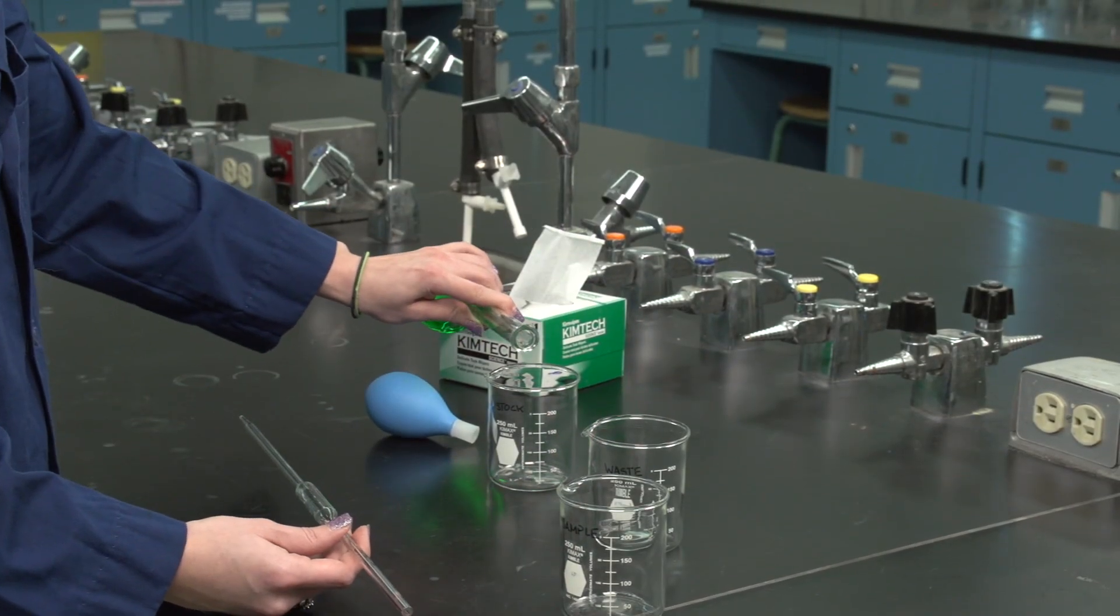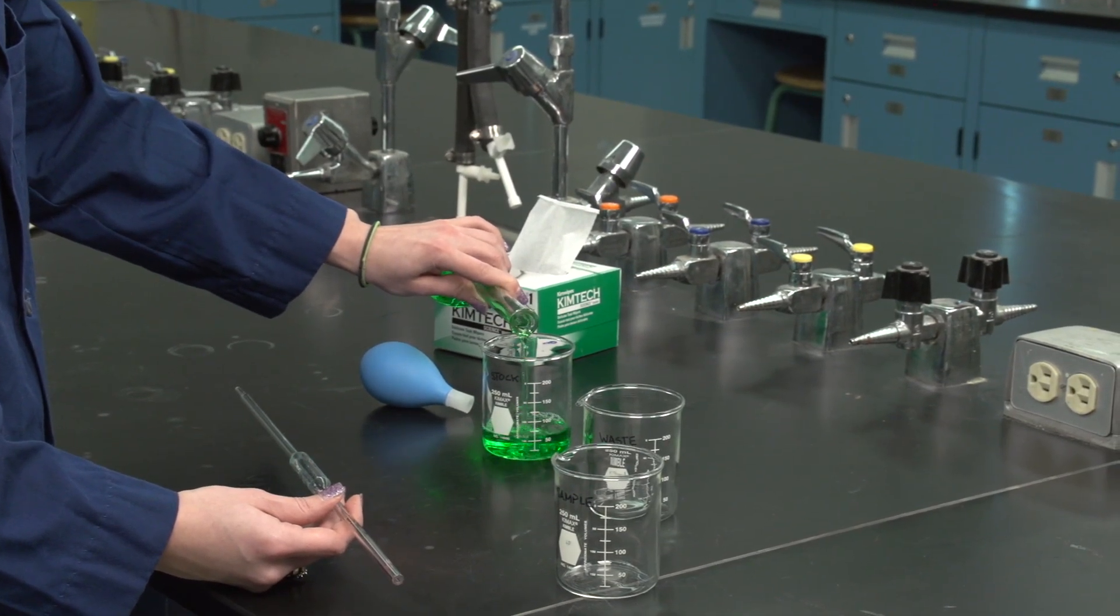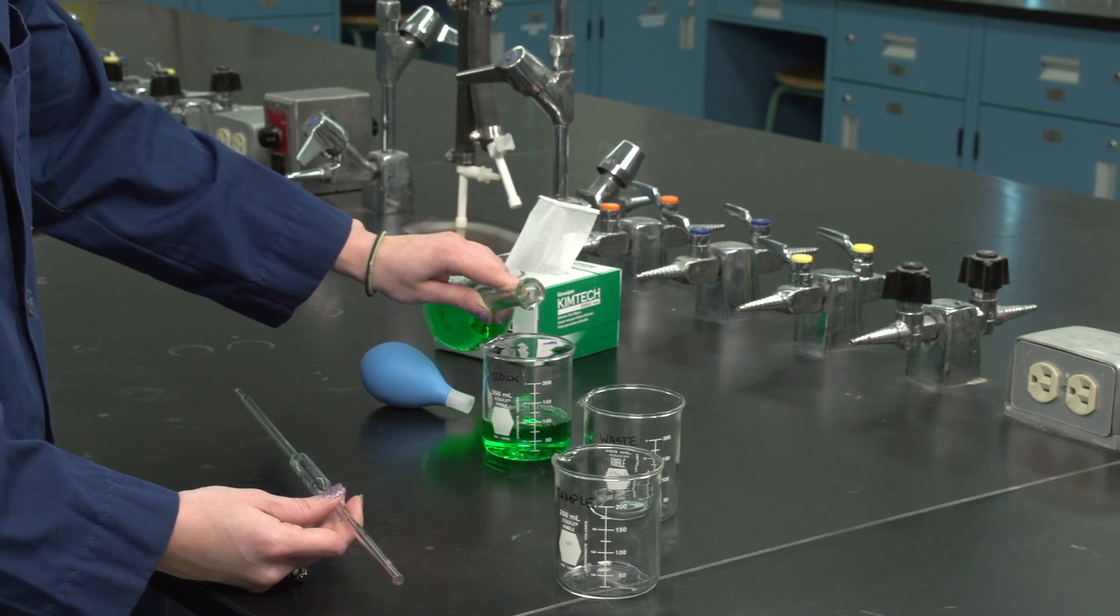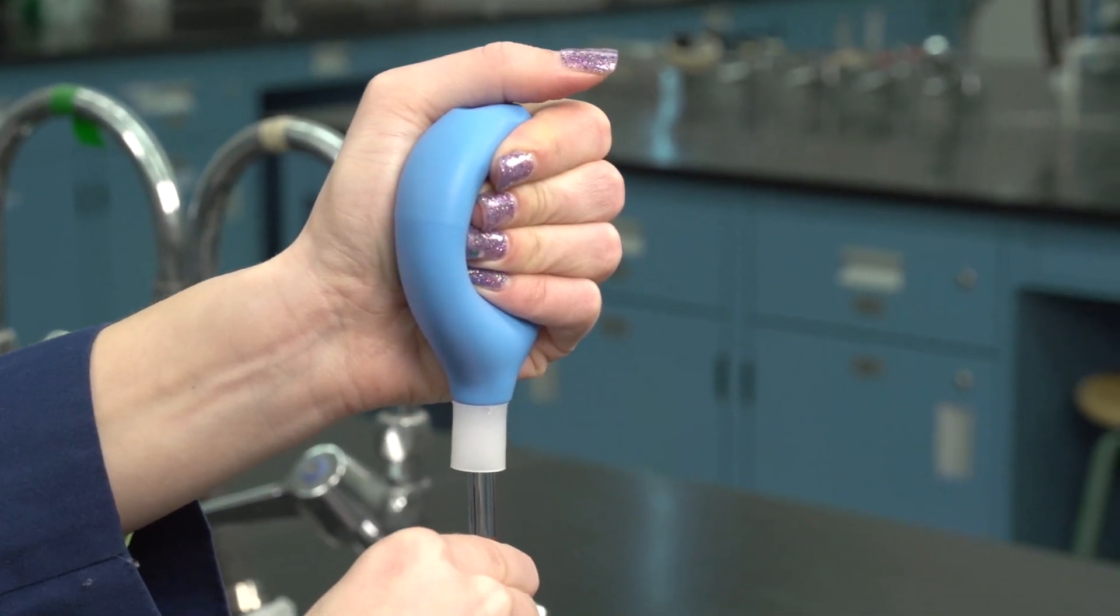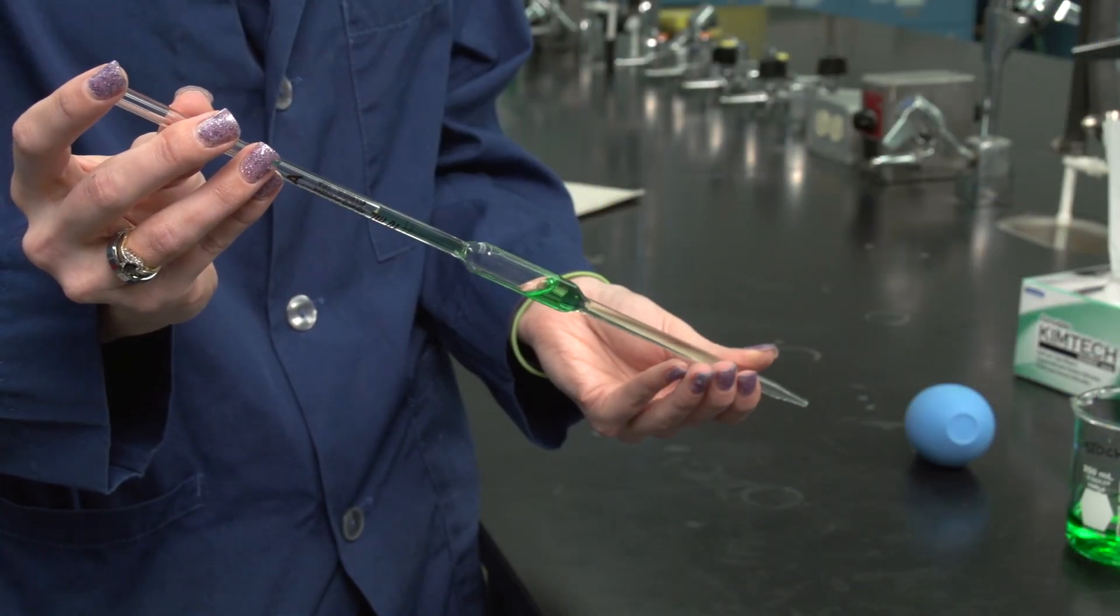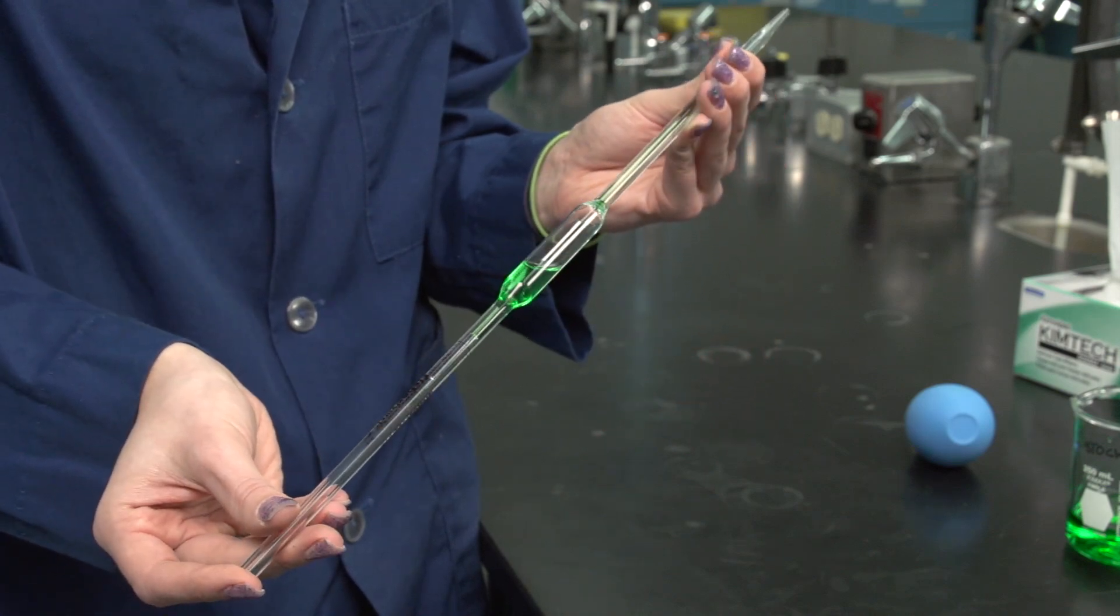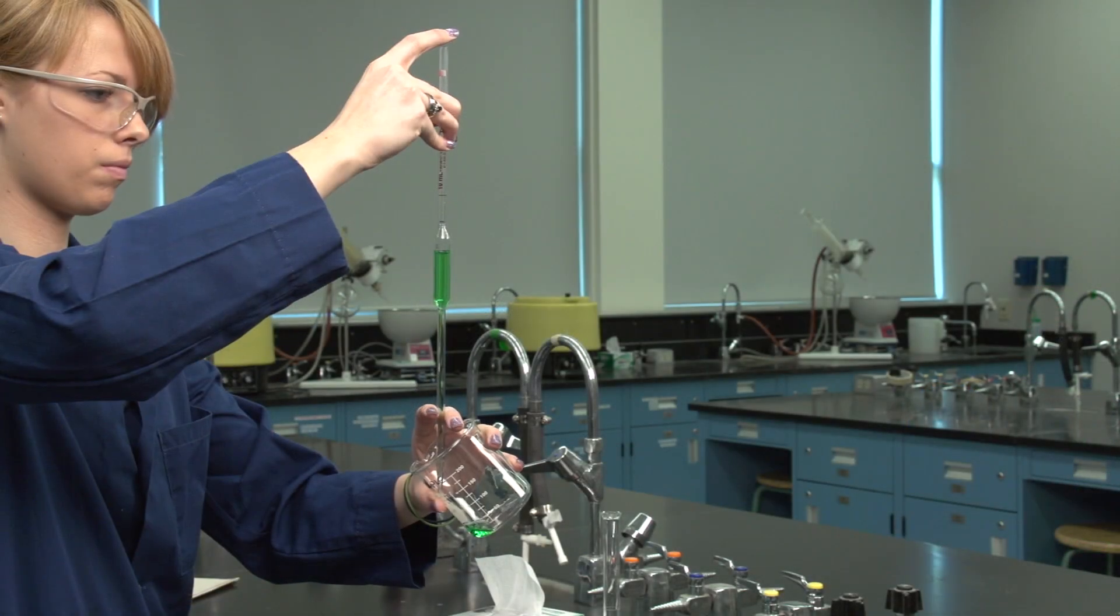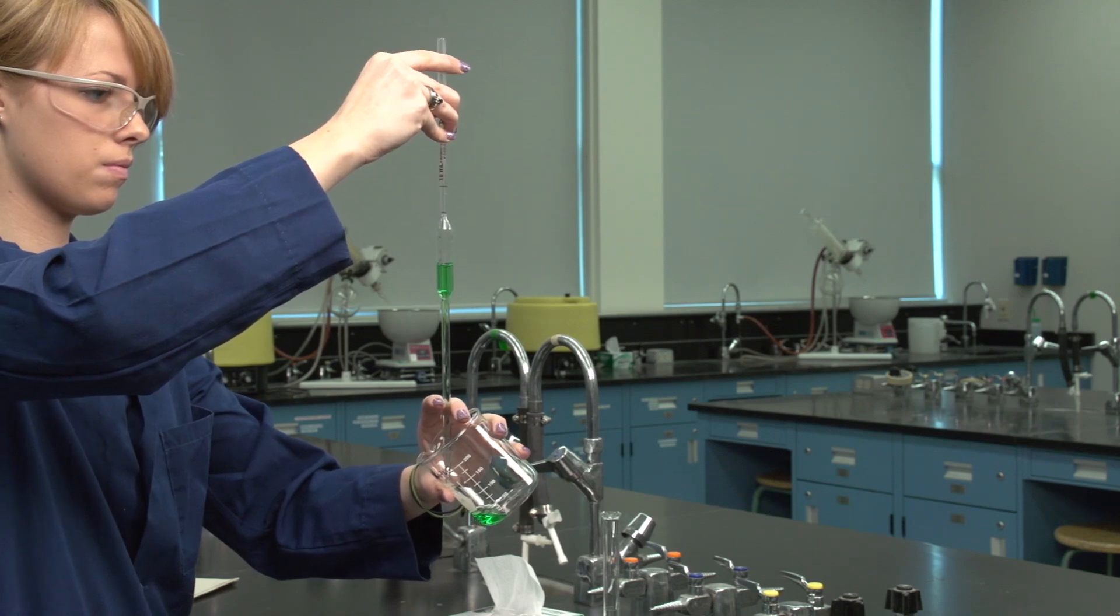Pour the liquid to be pipetted into a beaker. Make sure there is sufficient liquid to fill the pipette and to rinse three times. Using a pipette bulb, draw up a small quantity of the liquid to be pipetted and thoroughly rinse the entire interior surface by rolling the pipette horizontally with a slight rocking motion. Drain the rinse liquid into a waste beaker. Repeat the rinsing procedure at least two more times.